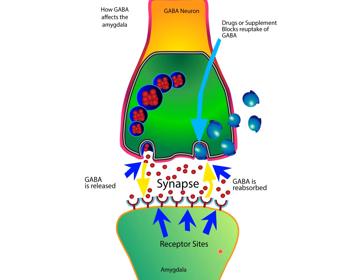Here is the amygdala — this is the fear center of the brain. When you have anxiety, the amygdala is hyperactive, and so are the fear circuits that it is connected to.